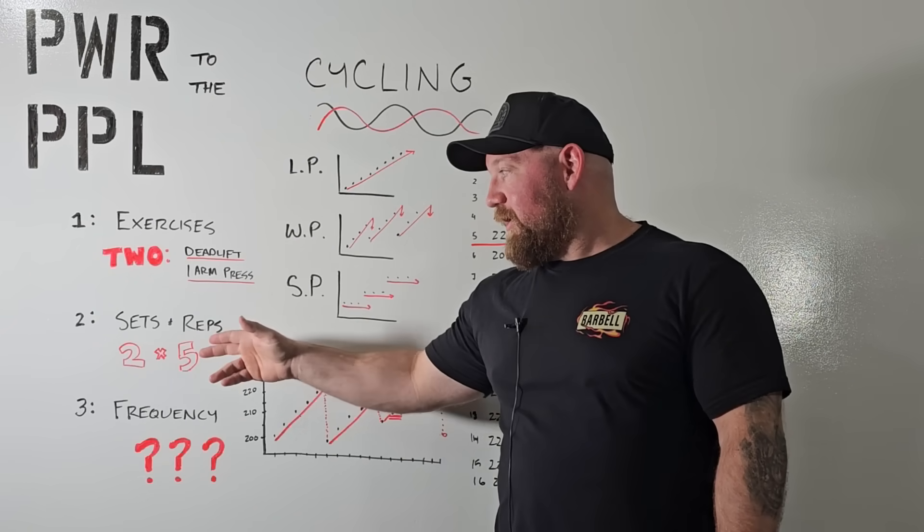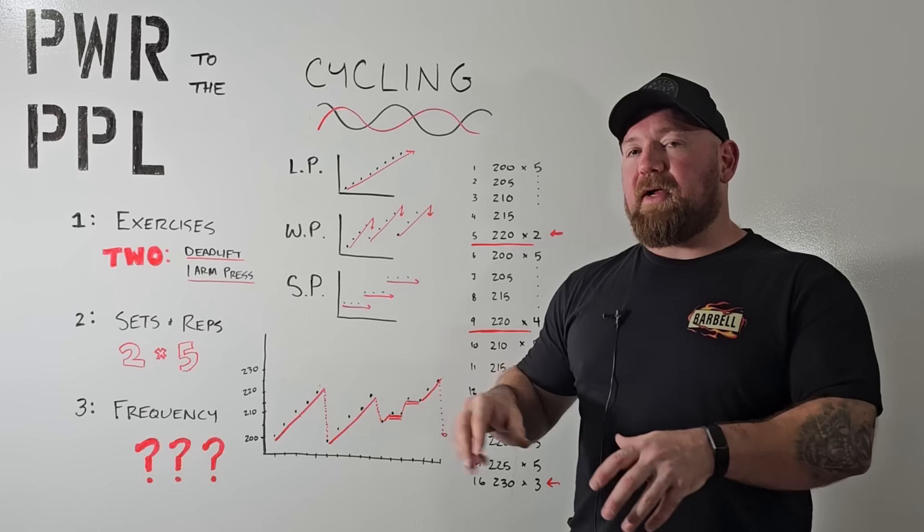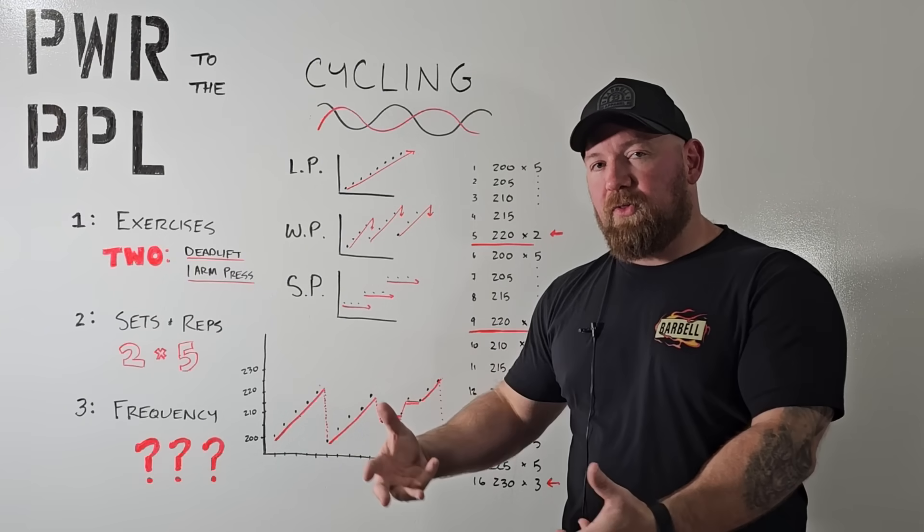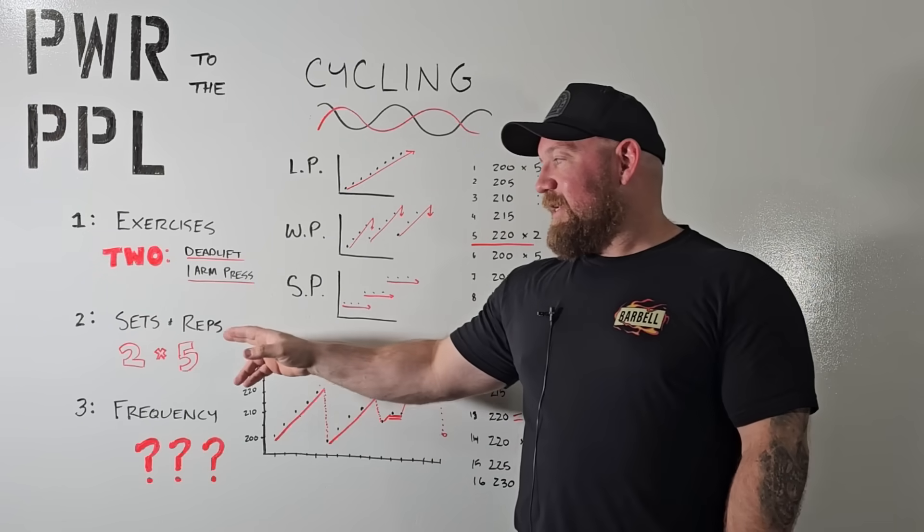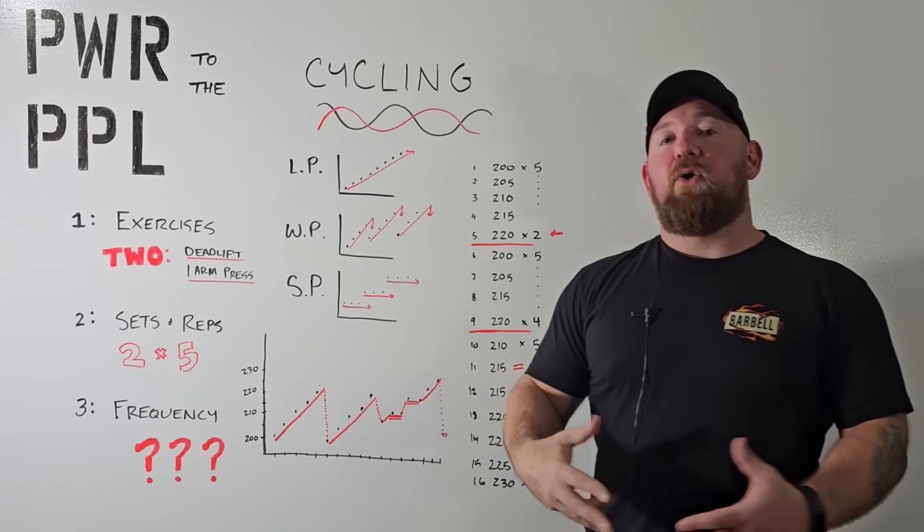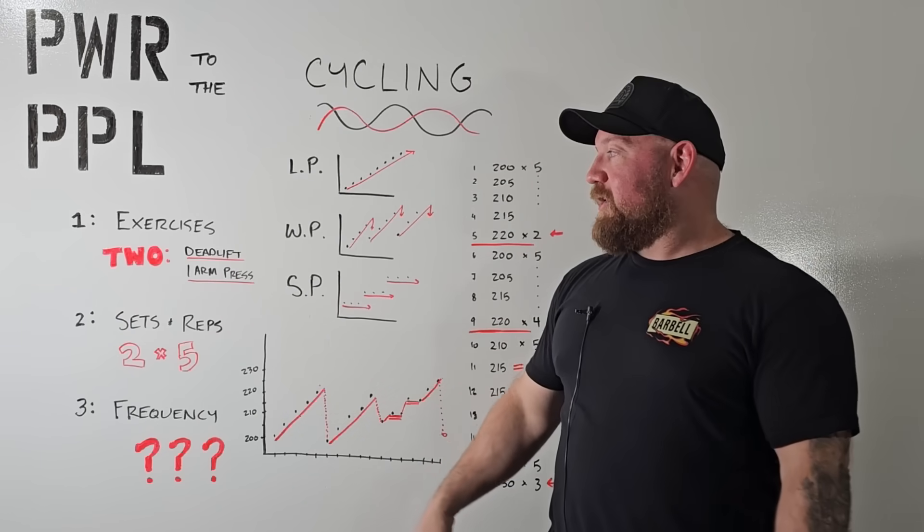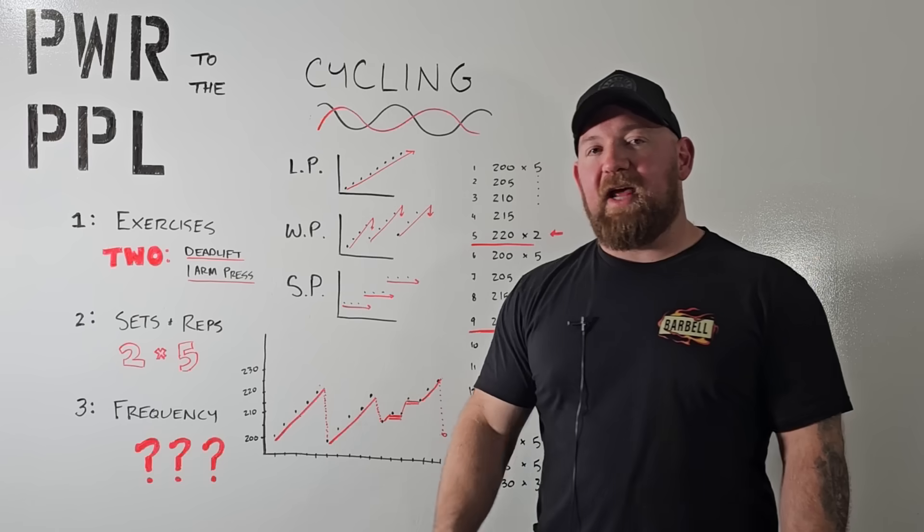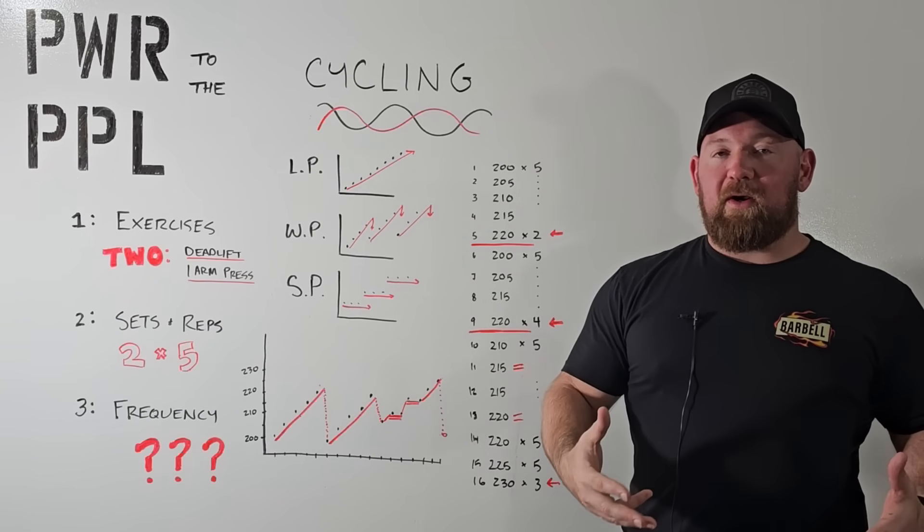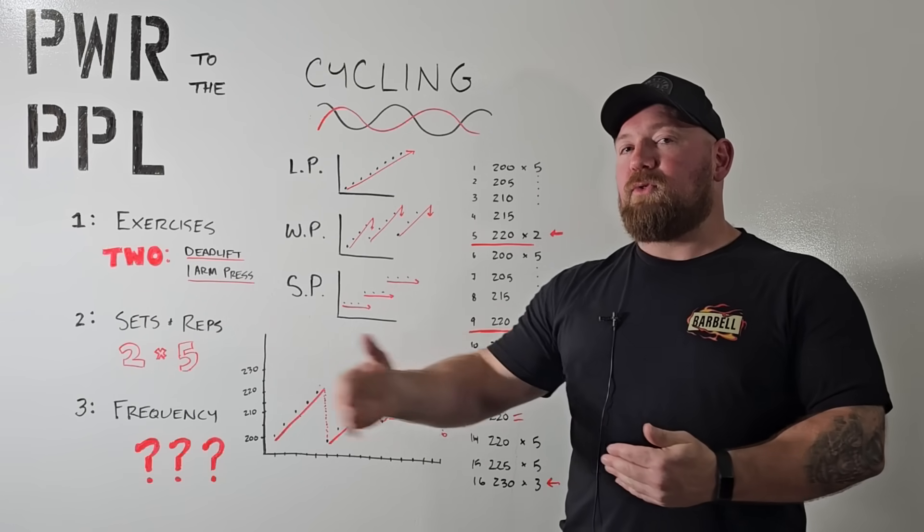Using these two main movements, the sets and reps: two by five, that's it. I prescribe something very similar in a lot of my workouts, but it tends to be surrounded with more overall volume. But this is a top set of five, followed by a back-off set 10% down, a second set of five. That's your work, that's what you're progressing forward. So two exercises, two sets, it's not a lot of work in a workout.